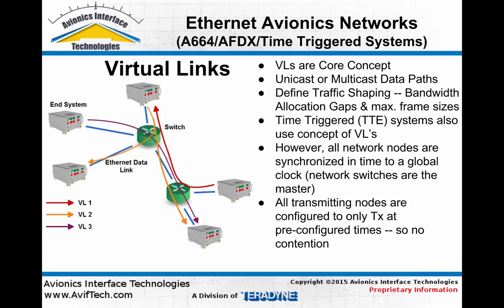A virtual link defines an allocated bandwidth that a transmitting node is allowed to use on that dedicated data path. By defining this allocated bandwidth and having switches that police it, no individual node can overuse the network and block or restrict the communications of other nodes. So virtual links provide a level of security and integrity to the network.